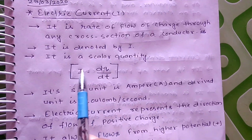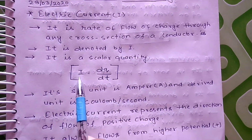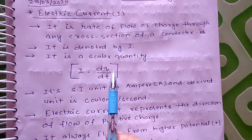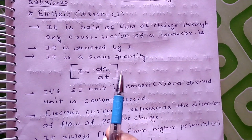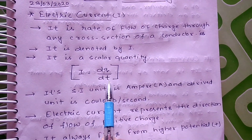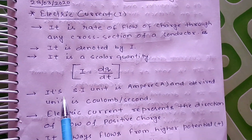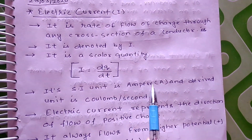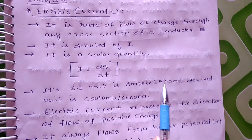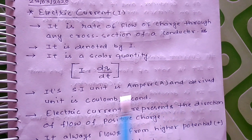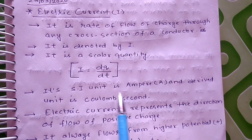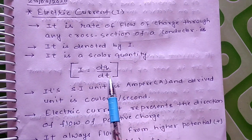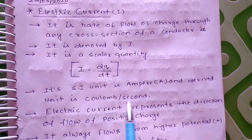So, how can we write it mathematically? I is equal to dq upon dt, or q upon t. Here, q is charge and t is time. Its SI unit is ampere — capital A. And the derived unit is coulomb per second, since charge is in coulomb and time is in seconds, so coulomb per second.